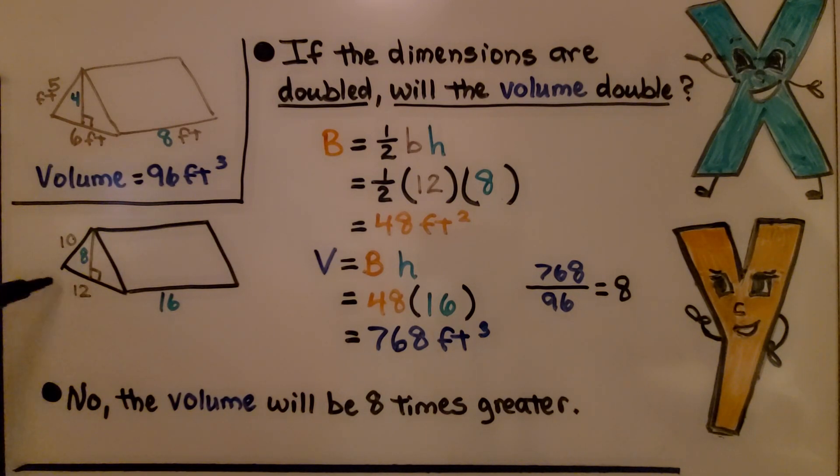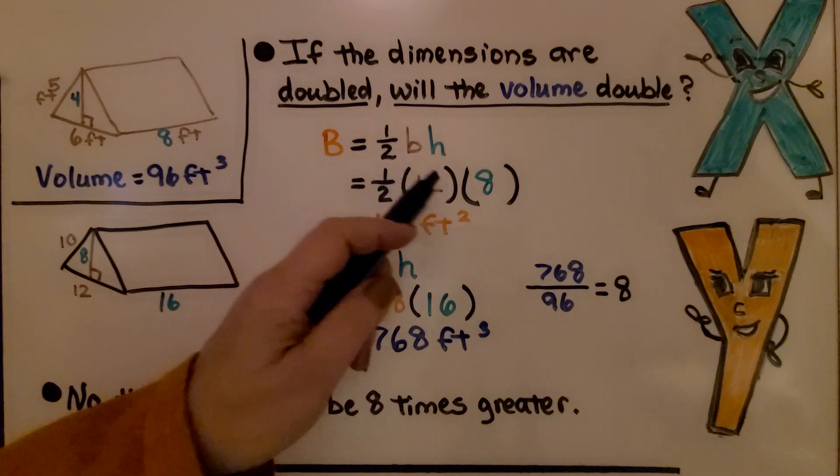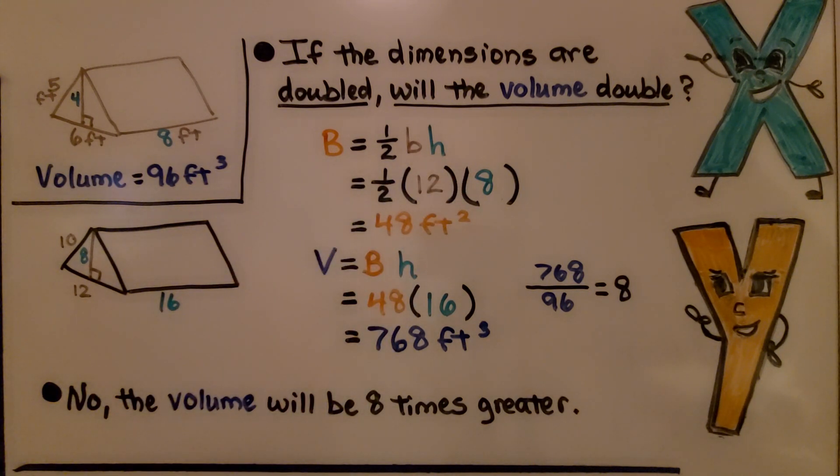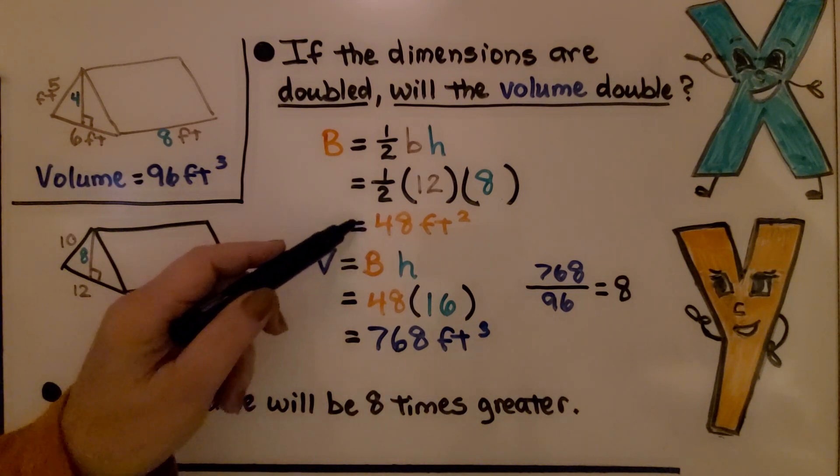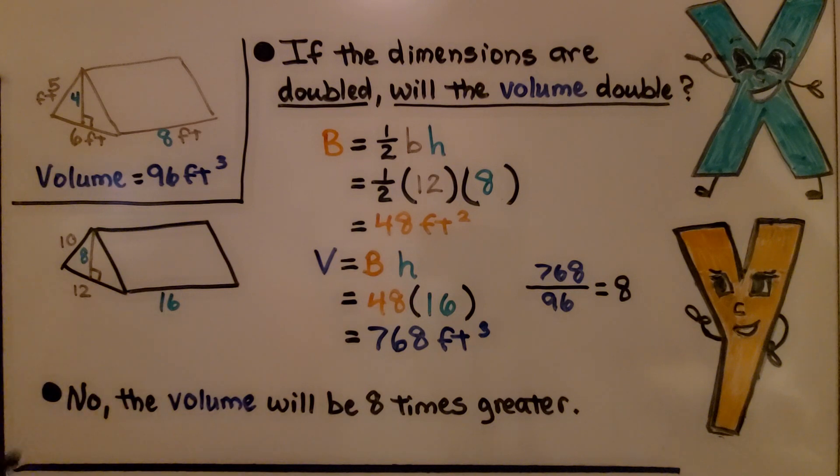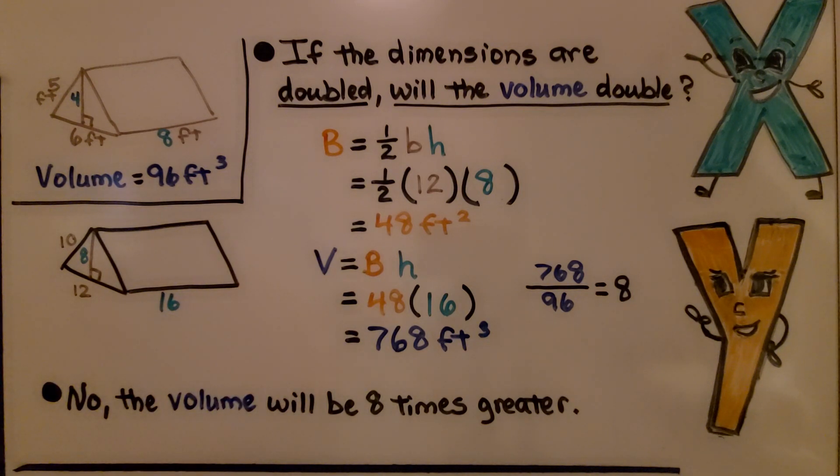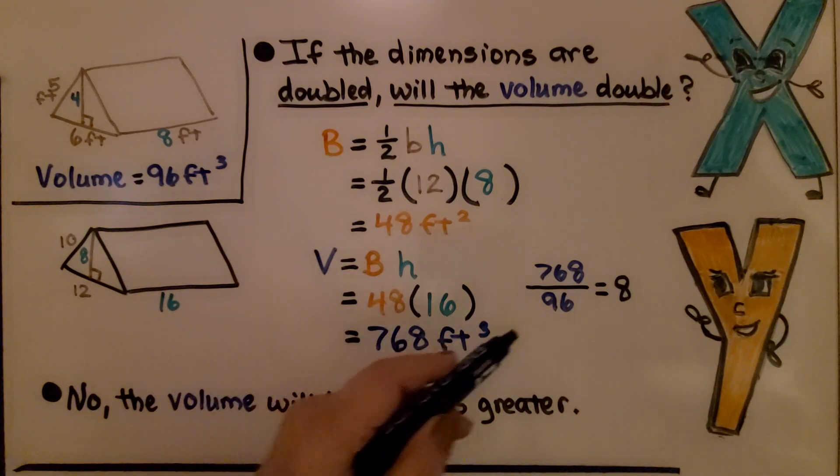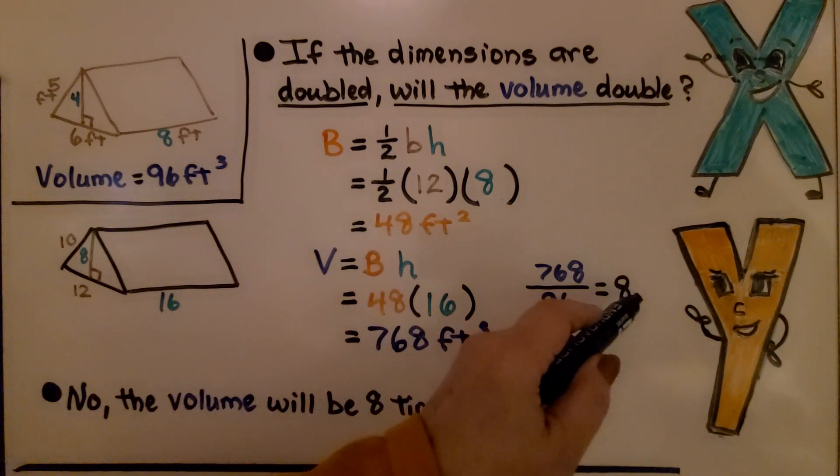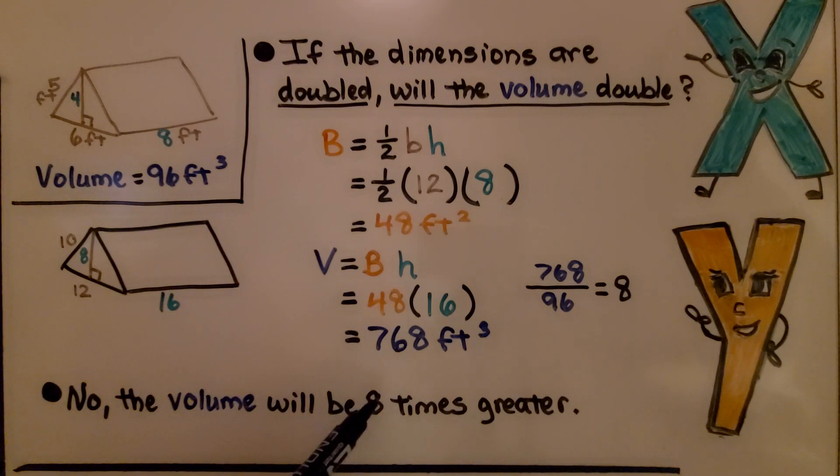Now we do ½(12)(8) = ½(96) = 48 feet squared for the area of the triangular base. The volume equals that base area times the height. So now instead of 8 feet, we've got 16 feet. 48 × 16 = 768 feet cubed. So no, the volume will be 8 times greater. 768 ÷ 96 = 8, which means 96 × 8 = 768. It's 8 times greater.